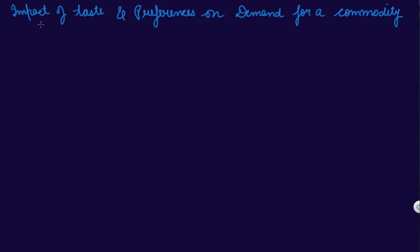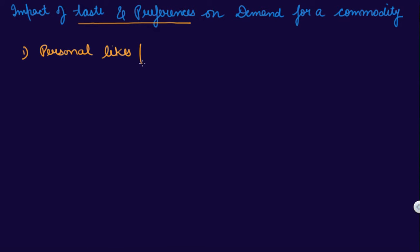In this video we will understand the impact of taste and preferences on demand for a commodity. Your taste and preferences are affected by three factors. The first is your personal likes and dislikes — some people like eating burgers, some people like eating pizzas.